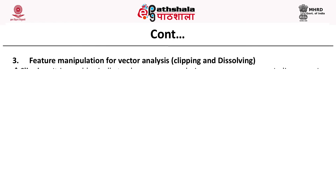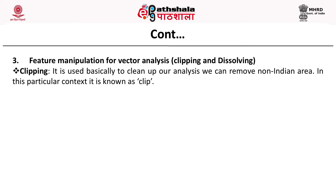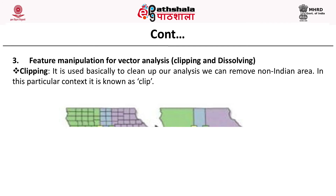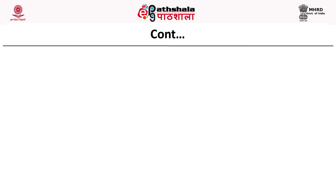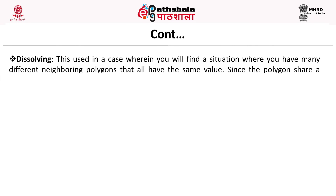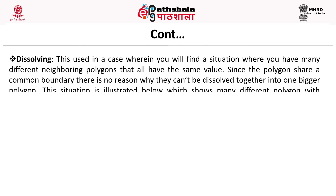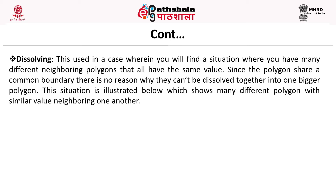Another example of vector analysis is feature manipulation, which includes clipping and dissolving. Clipping is used to clean up analysis — for example, removing non-Indian areas from the data. Dissolving is used when many different neighboring polygons have the same value; since the polygons share a common boundary, they can be dissolved together into one bigger polygon, as illustrated in the figure.